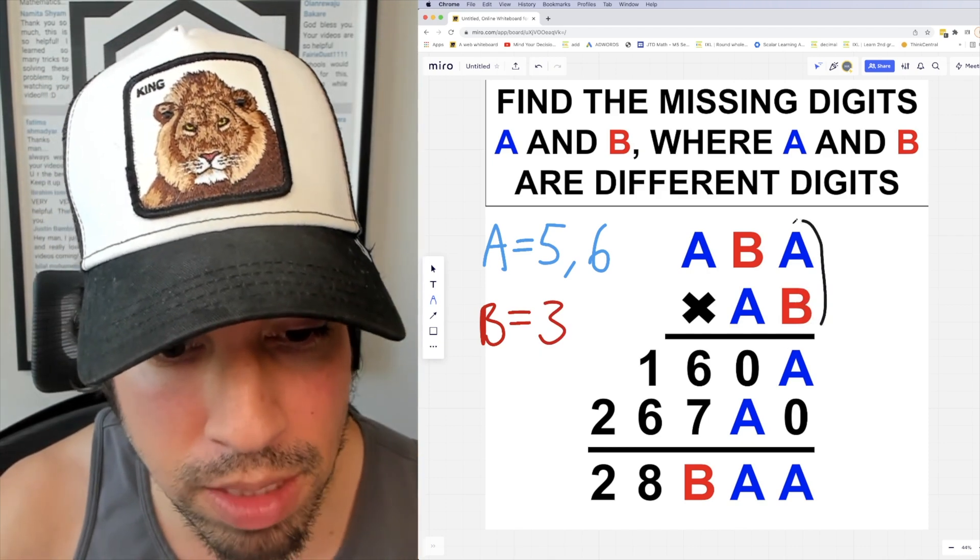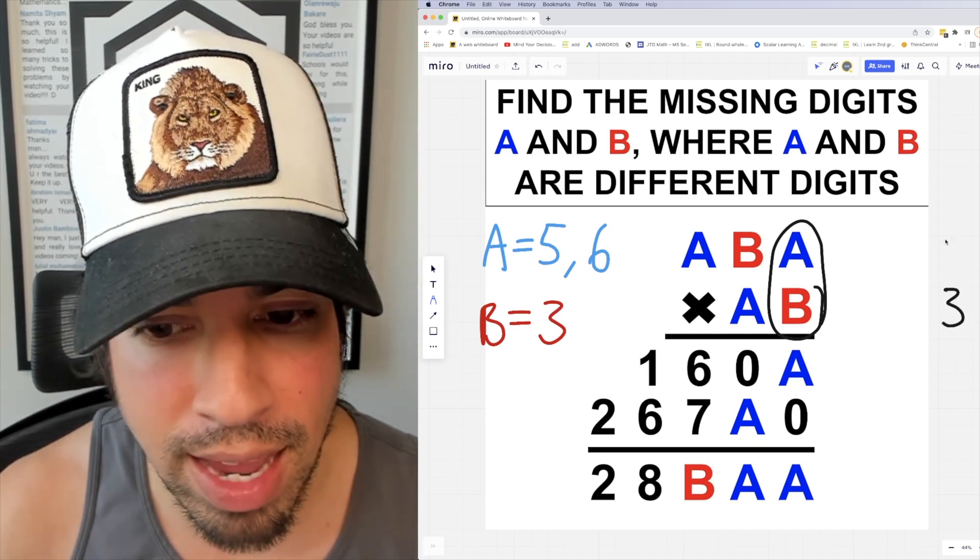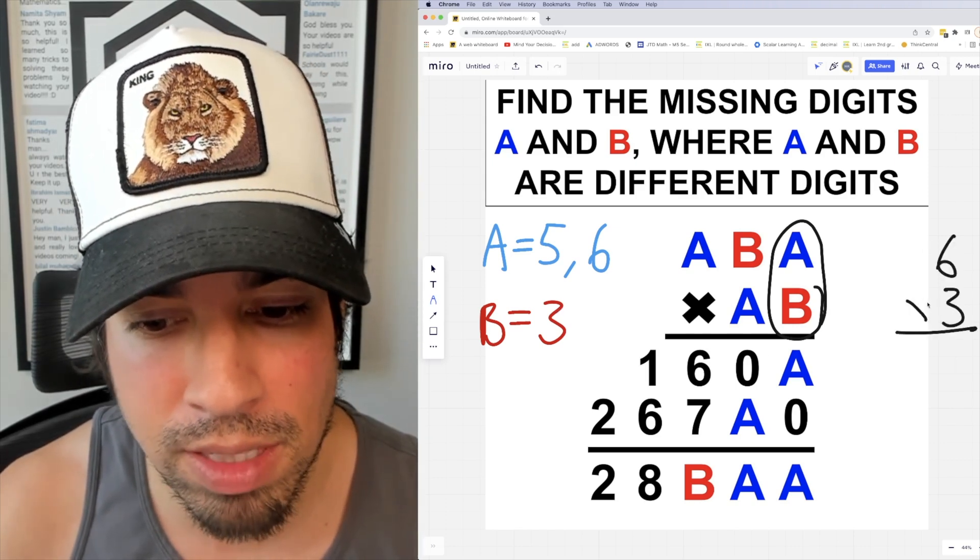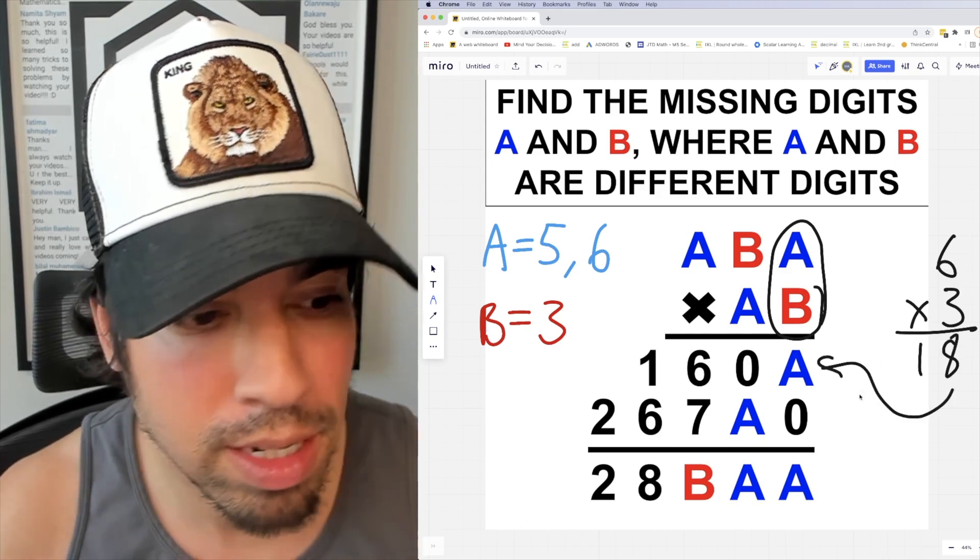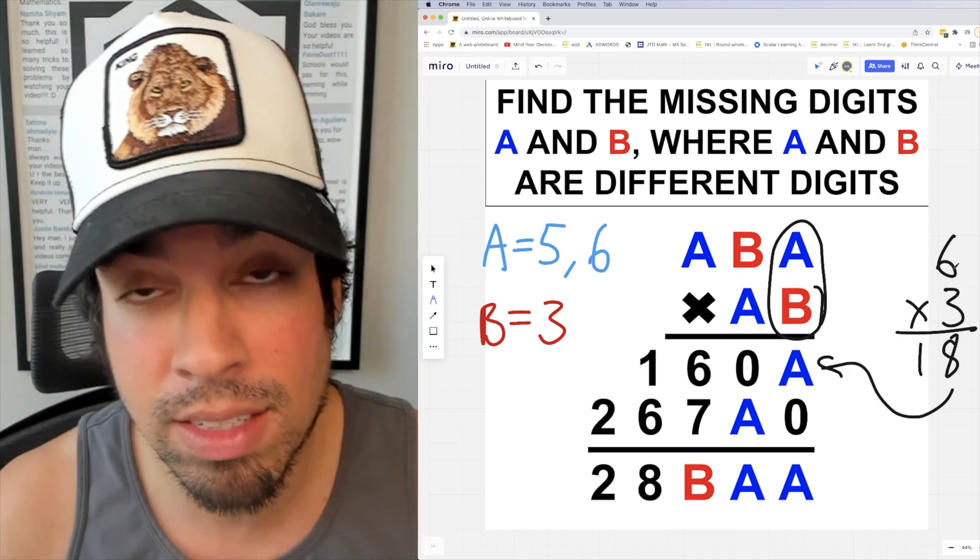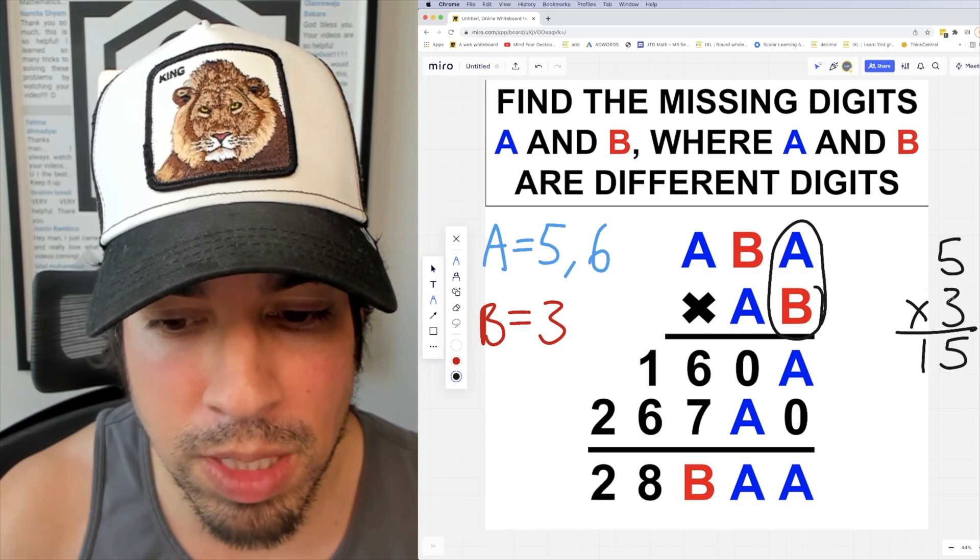Since B is definitely three, let's revisit B times A. So B times A ends in an A. Well, check it out. If B were three and A is six, three times six is 18. That means that A would be eight. But A can't be eight. In this case we chose six. But if A were five, three times five is 15, which means we would get A occurring again.